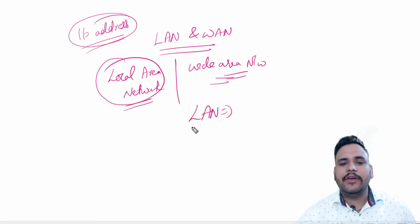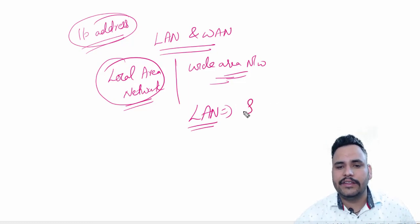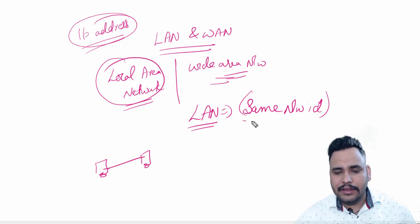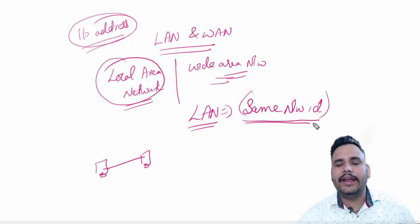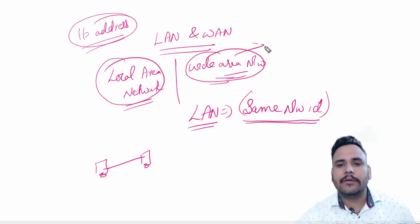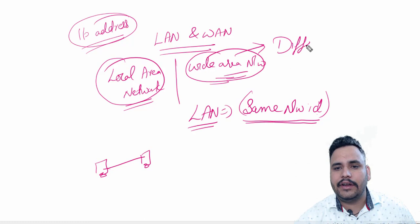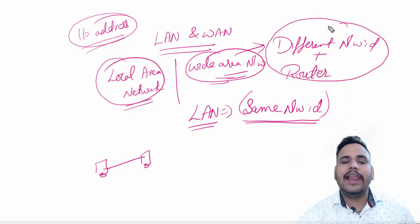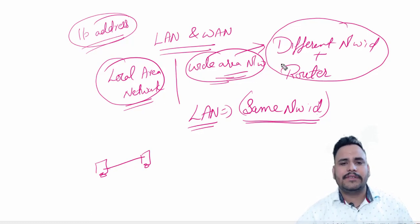LAN means if devices are connected with each other with the same network ID — for example, if we have two devices and they are connected with one cable, then they have the same network ID, which means they are in a LAN. Wide area network means if devices are connected with different network IDs, and another device named router is being used. So the difference between LAN and WAN is: LAN is used for small area purposes and wide area network is used for worldwide connectivity.